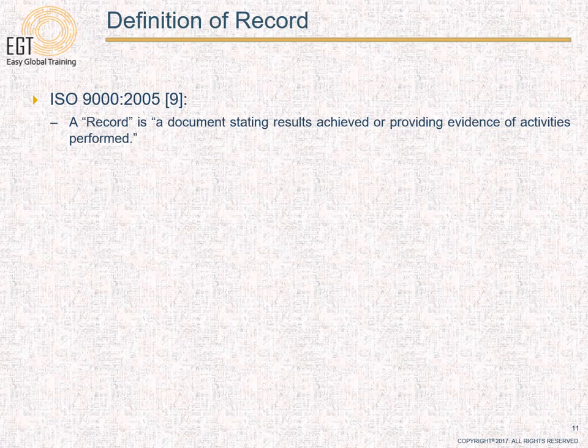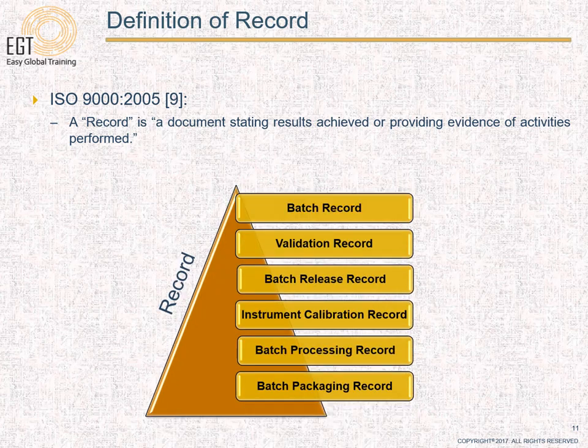Based on ISO, a record is a document stating results achieved or providing evidence of activities performed. Records provide evidence of compliance with established requirements and effectiveness of the operation. Records can be used to document traceability and provide evidence of verification, preventive action, and corrective action. Generally, records do not need to be under revision control. Examples include batch records, validation records, batch release records, instrumentation calibration records, batch processing records, and batch packaging records.